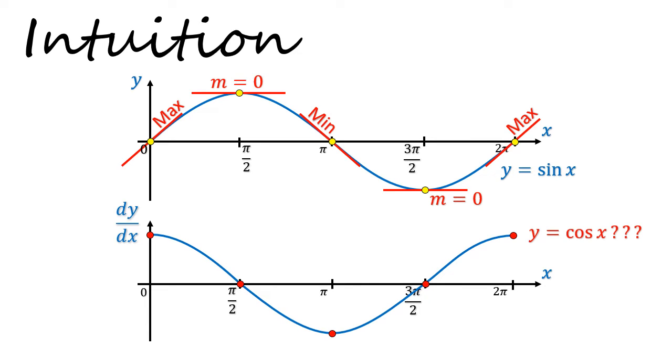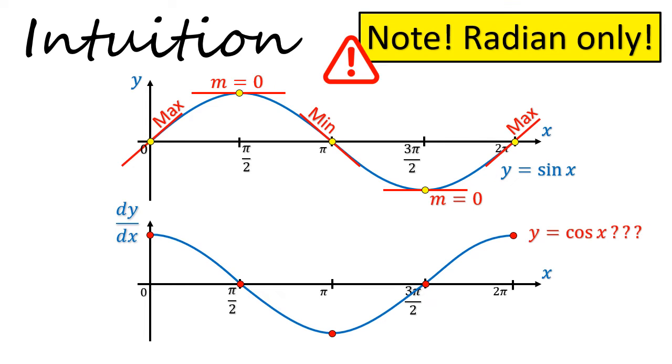Now this is not sufficient. We need a proper proof in math. So before we go into the proper proof, I would also like to put an important warning here. The entire derivation will be done in radian measure, and we will understand this better when we go through the proof in detail.